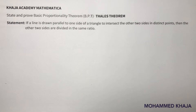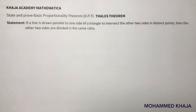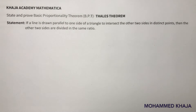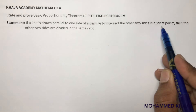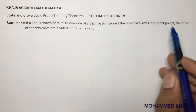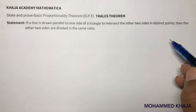State and prove the Basic Proportionality Theorem (BPT), also known as Thales' theorem. The statement is: if a line is drawn parallel to one side of a triangle to intersect the other two sides in distinct points, then the other two sides are divided in the same ratio.